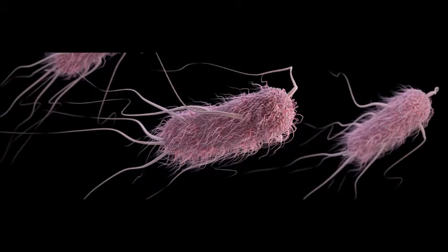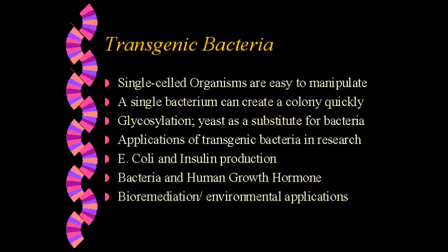A popular transgenic organism is Escherichia coli, which is used to make insulin for diabetics. Bacteria can be used to make a wide variety of biochemical products, including the hepatitis B vaccine, human growth hormone, and interferons.